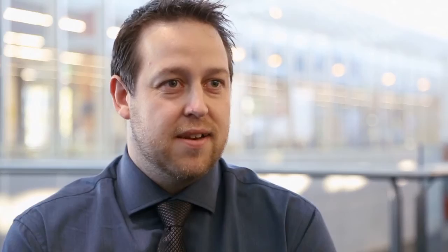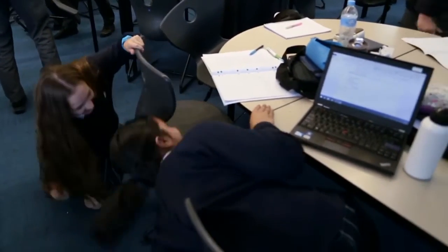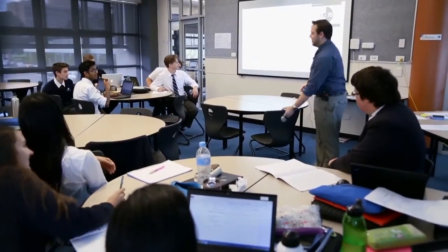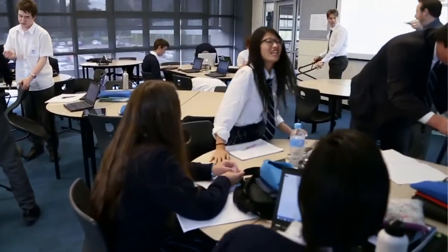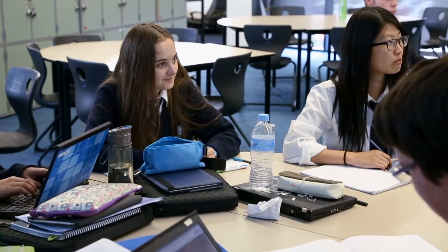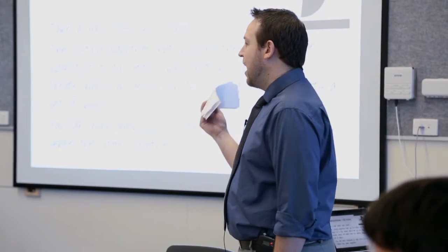Then there was a demonstration where students went away and found their algorithm under their chair and had a go at producing an explanation of it. Putting things under the chair was designed as a different way of getting them into groups rather than just their friendship groups. Each group got a type of sorting algorithm, and the task was to do a stop motion video of how that sorting algorithm would sort five numbers.